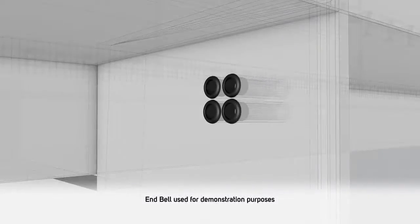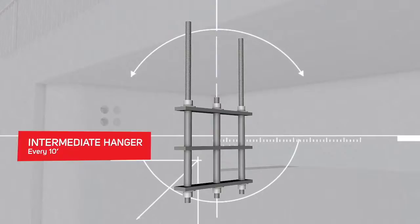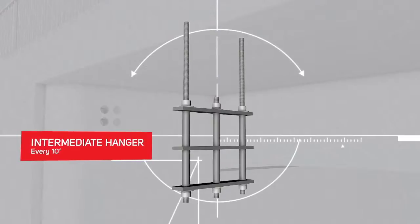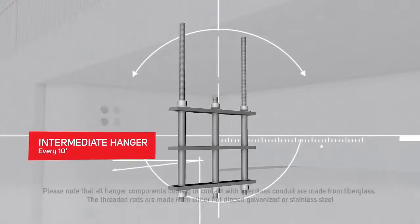After the end bells or box connectors have been installed, the first two or three intermediate hangers are installed at intervals of 8 to 20 feet depending on the conduit deflection values. For demonstration purposes, these hangers are installed every 10 feet.